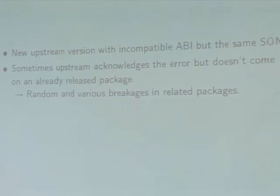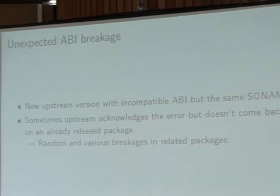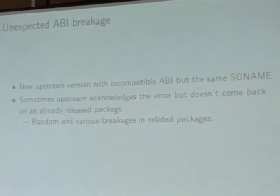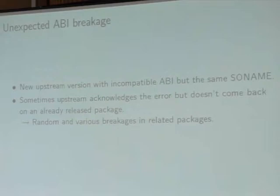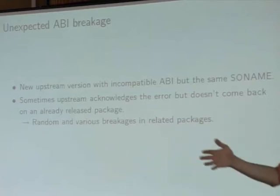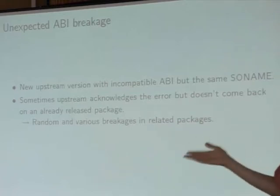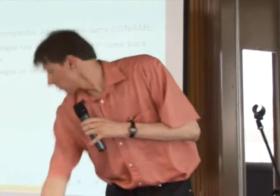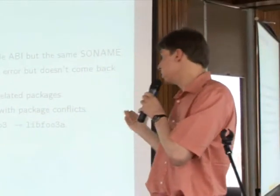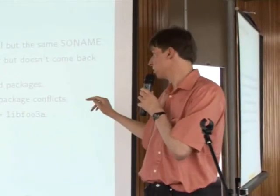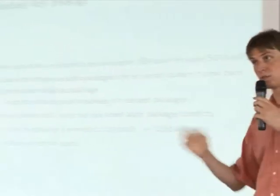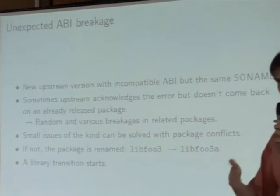Another very frequent mistake is changing the ABI without changing the soname, and this generates a great mess. Once the library is released, upstream doesn't know what to do because there is already, in the wild, a release that is broken with a changed ABI. So generally they say they will stay with this version. If the change is small enough, you can use package conflicts — conflict with the packages that are broken by this ABI change.